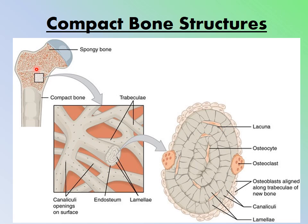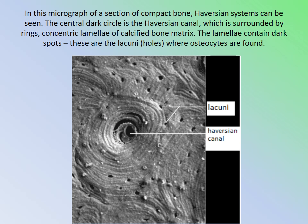Continuing with compact bone structure: spongy bone is in the center of long bones, and compact bone surrounds it. A close-up view shows the lacunae, osteocytes, osteoclasts, osteoblasts, and canaliculi within the compact bone. A micrograph of compact bone shows the Haversian canal as a dark circle surrounded by concentric lamellae of calcified bone matrix. The lamellae contain dark spots called lacunae, which are holes where osteocytes are found.